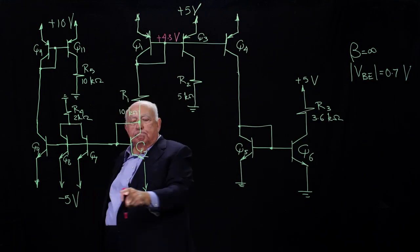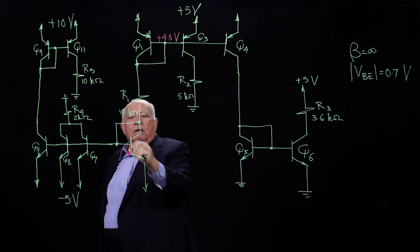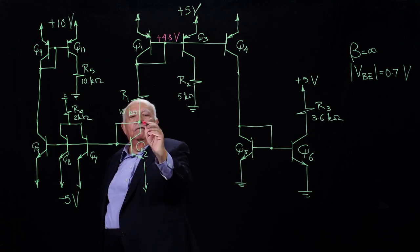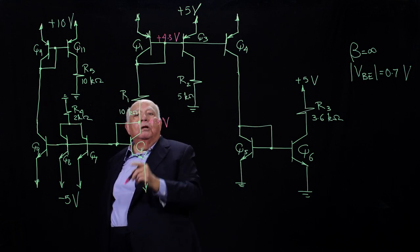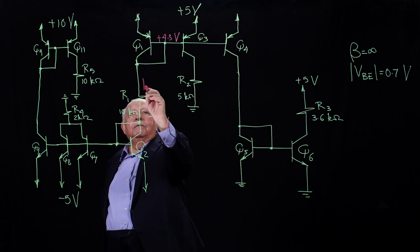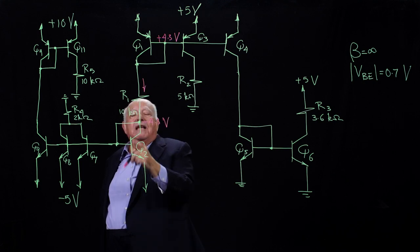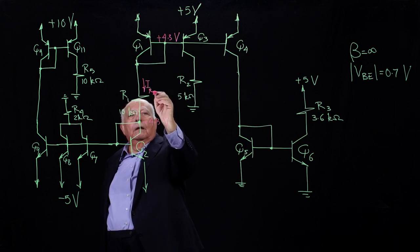And that's minus 5 down here. So the voltage at this node is 0.7 volts above minus 5, so the voltage right here is minus 4.3 volts. We are now in the fortunate situation that we know the voltages at the two ends of R1, so we can calculate the current through R1. Since that will act as a reference current for the rest of the circuit, I'm going to call it IREF — reference current.